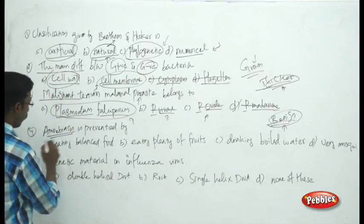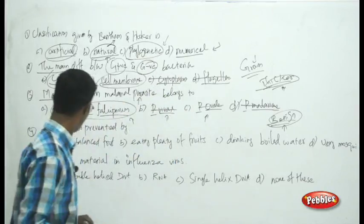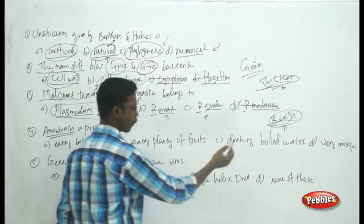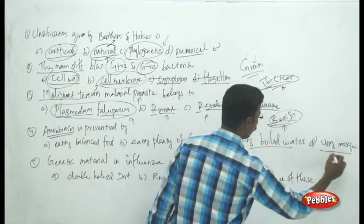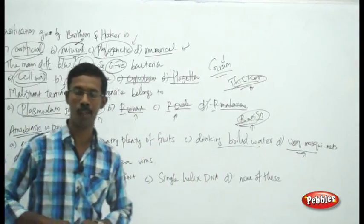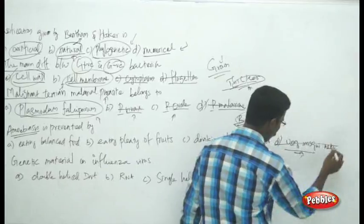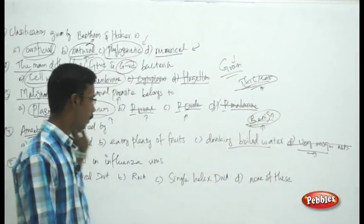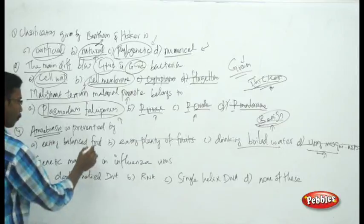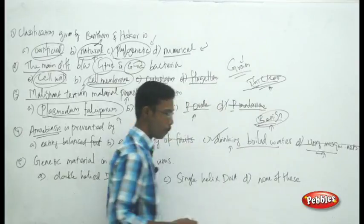The next question asks how amoebiosis is prevented — by eating balanced food, eating plenty of fruit, drinking boiled water, or using a mosquito net? Amoebiosis is caused by Entamoeba, a protozoan living in water environments. A mosquito net is irrelevant, as is eating balanced or plenty of food. The correct answer is drinking boiled water to prevent amoebiosis.